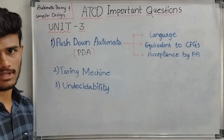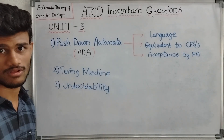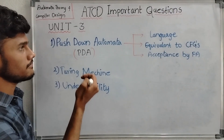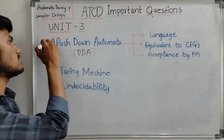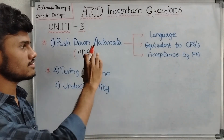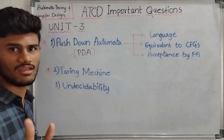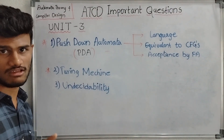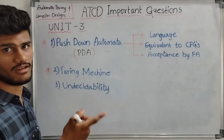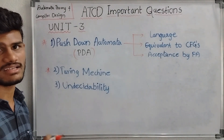Coming to our third unit, which is completely on Pushdown Automata. The first topic is Pushdown Automata itself — a very easy topic. Key subtopics include language of pushdown automata, equivalence to CFG (Context-Free Grammar), and acceptance by finite automata. We can describe the active pushdown automata as well. Basic principles about pushdown automata can be answered for 5 or 10 marks.